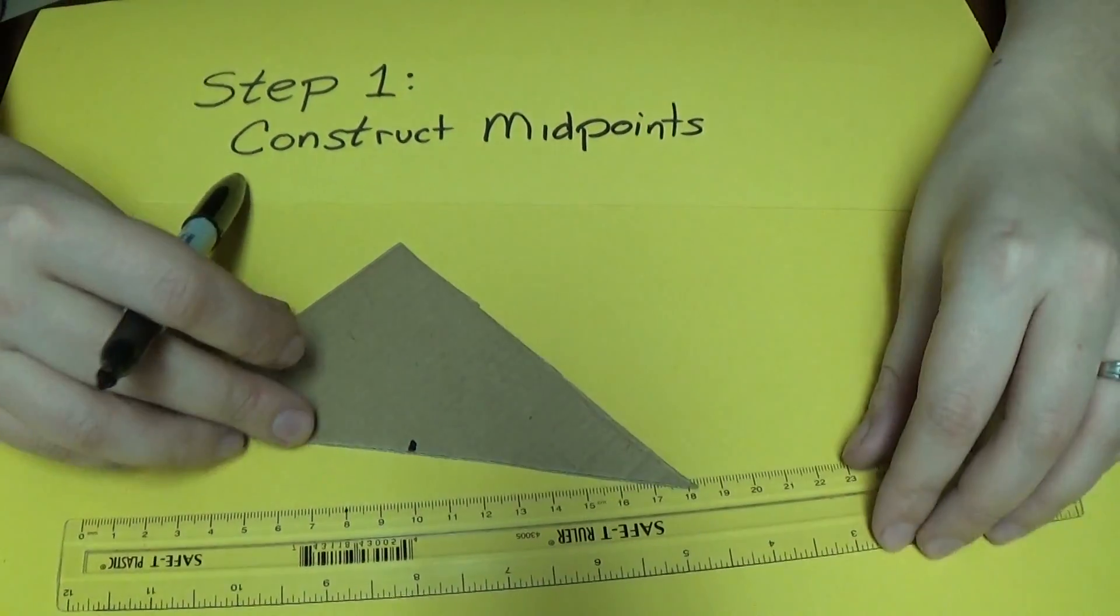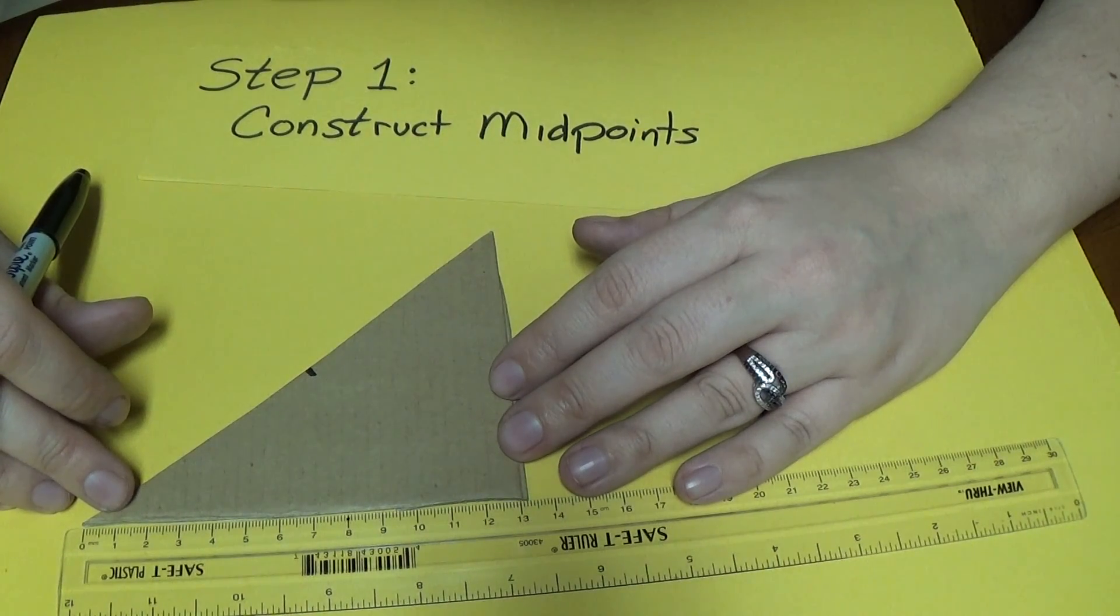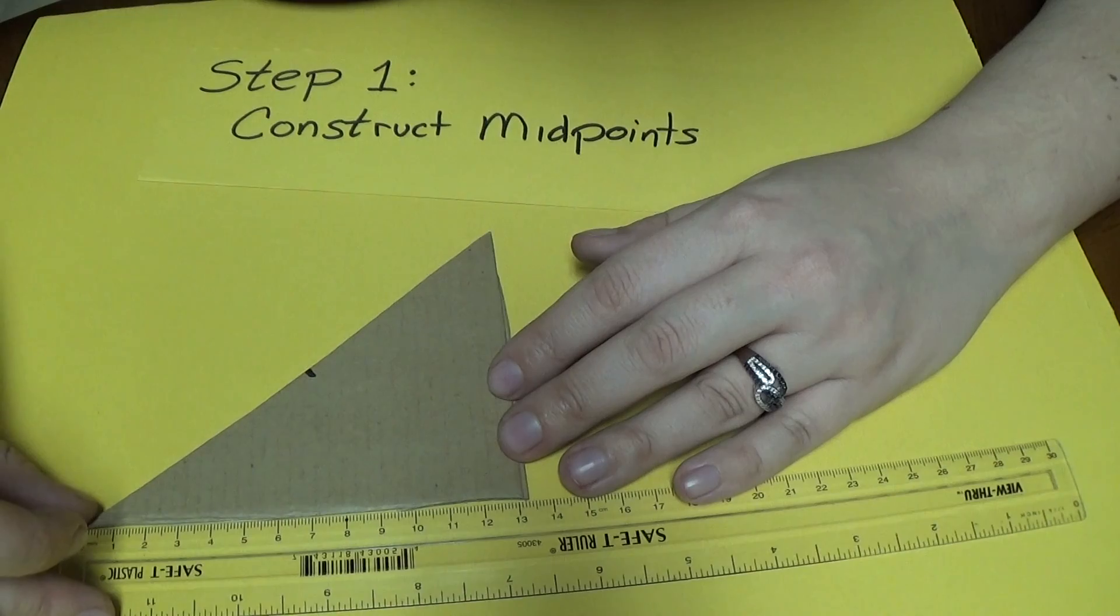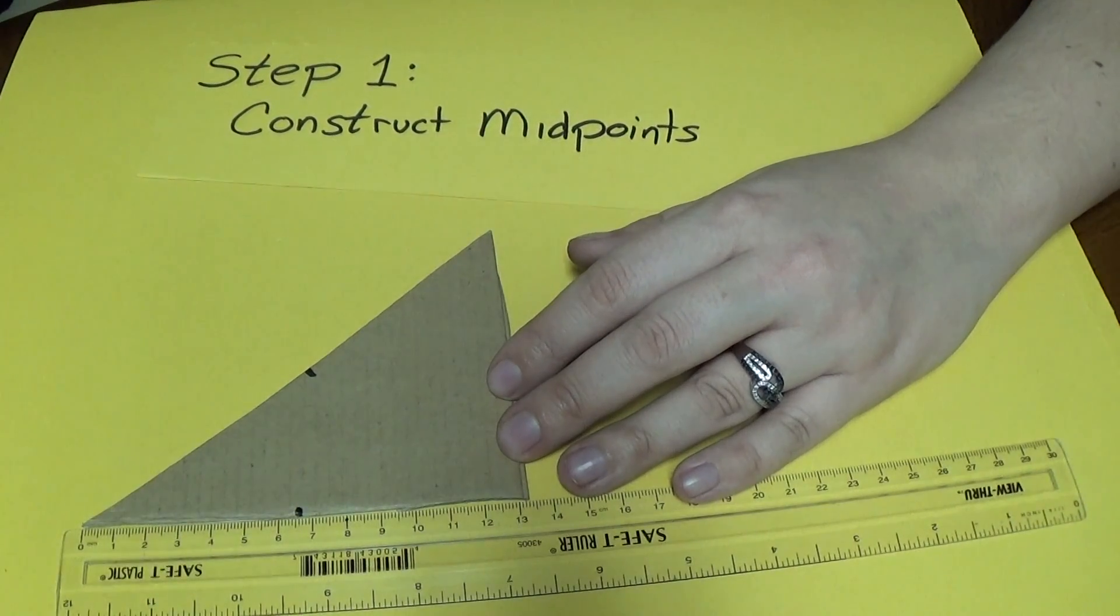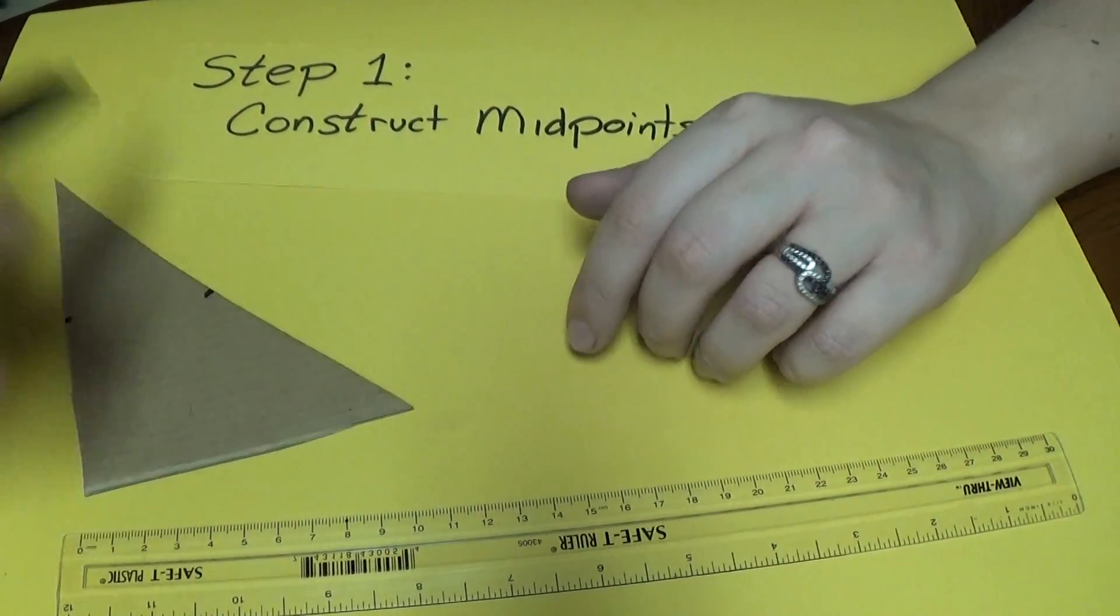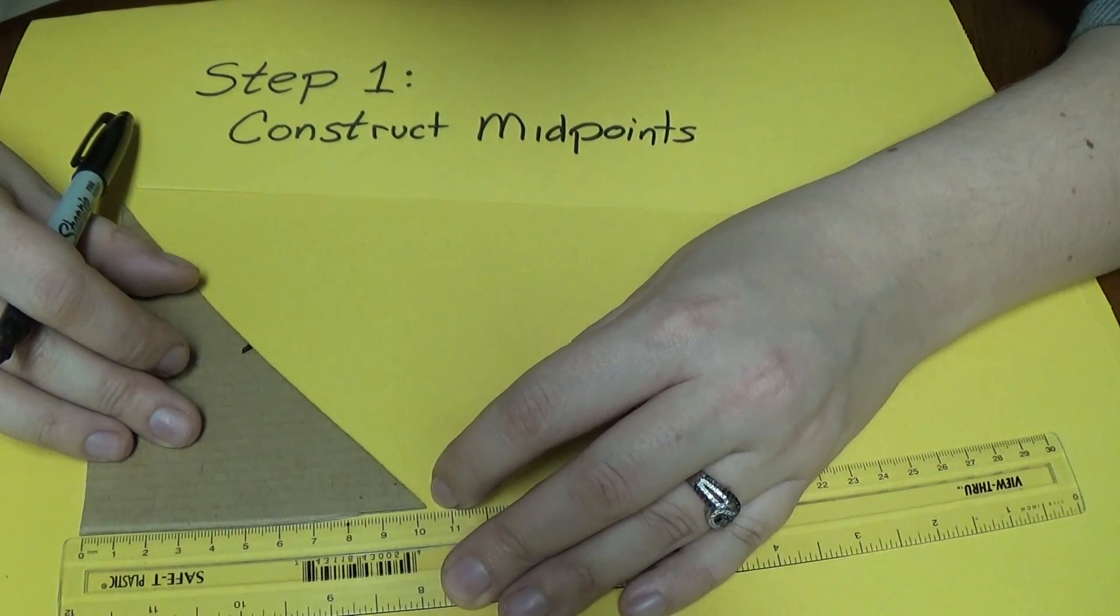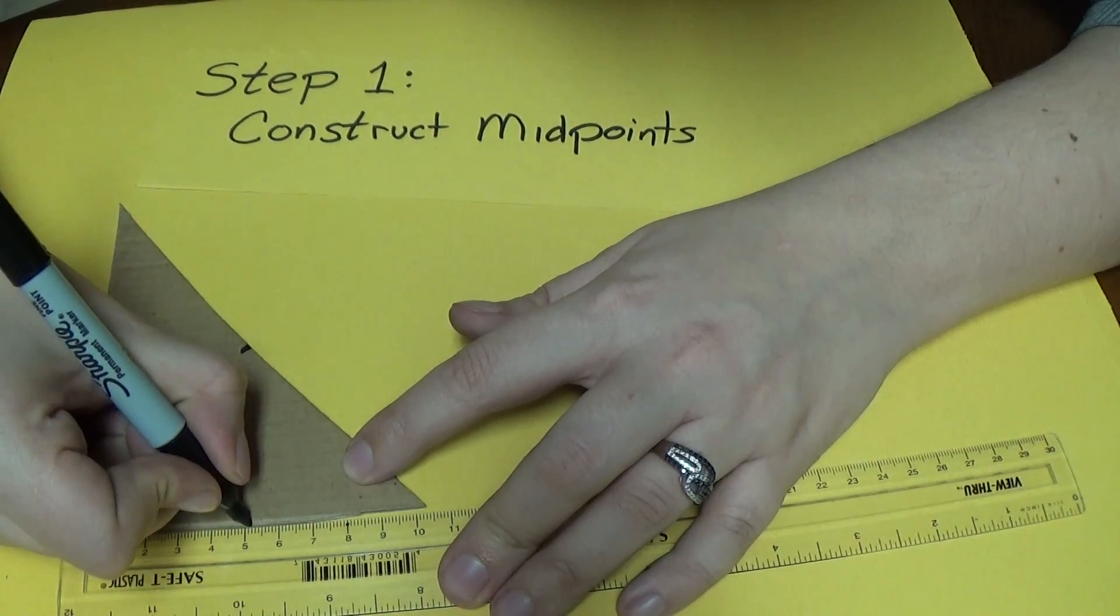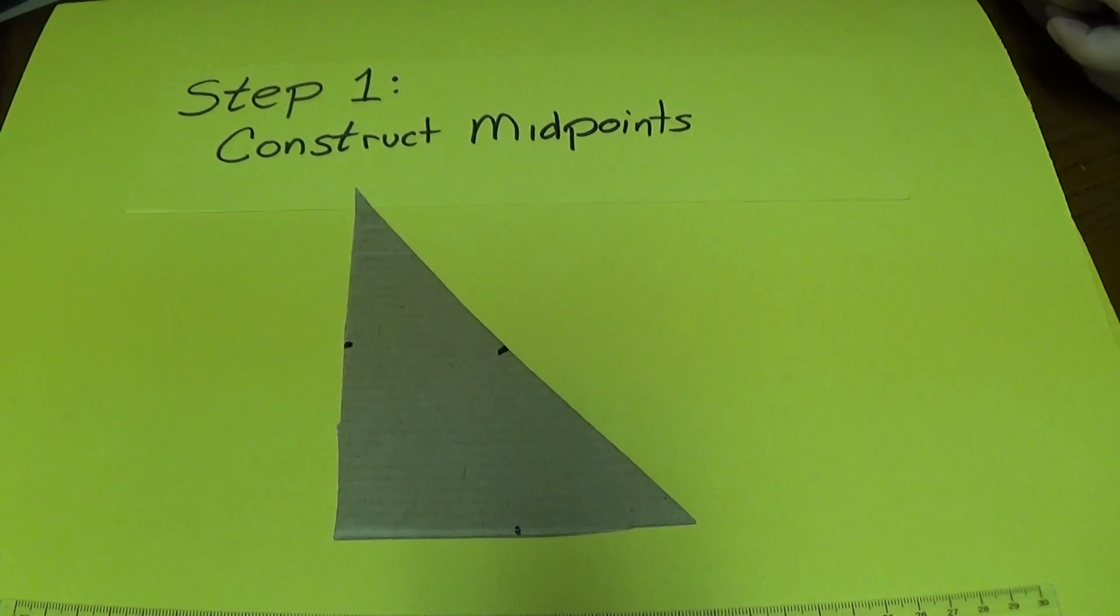Let me do the same thing for the other two sides. Only three sides on a triangle, my bad. So this side here is thirteen point two centimeters. So thirteen point two divided by two is six point six centimeters. So we go here to six, six and a half, six point six. Make a little mark. Then the last side that I have is ten point two centimeters long. So ten point two divided by two is five point one. So just the first tick after five. So there we go. Step one is complete. We have all of the midpoints of the triangle.